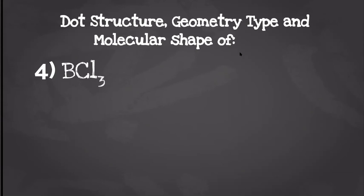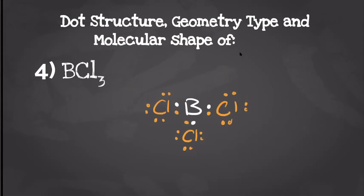For our next one we have boron chloride. Boron is going to have three valence electrons and each chlorine is going to have seven valence electrons, so when we draw our dot structure it should look something like this. Boron can only form three bonds because of those three valence electrons, so it'll be stable and happy like that. Each chlorine is going to have eight valence electrons so it'll have a full shell. We're going to end up with a geometry type of AB3 because we have one central atom with three things attached to it, giving us a molecular shape of trigonal planar.